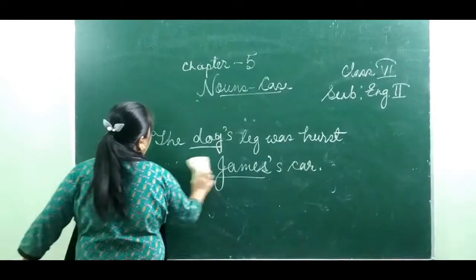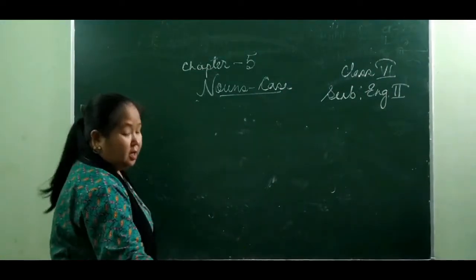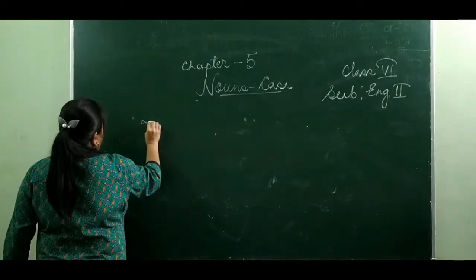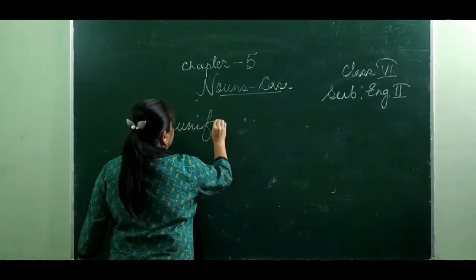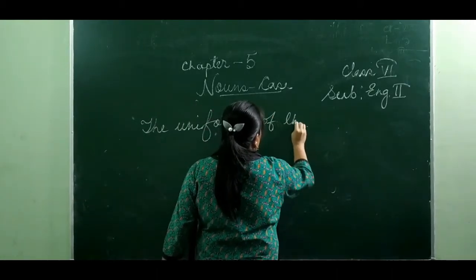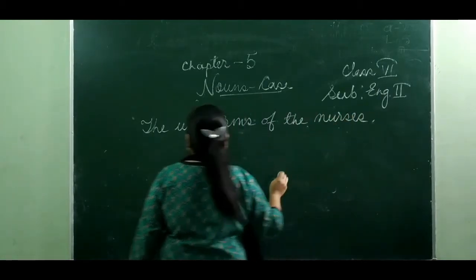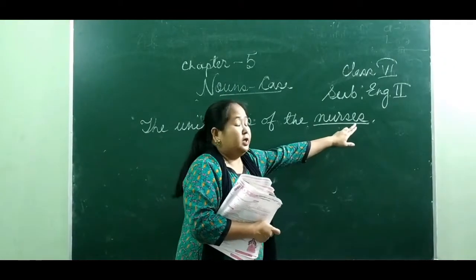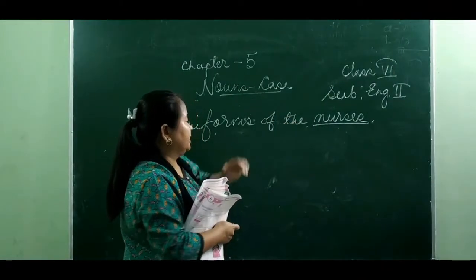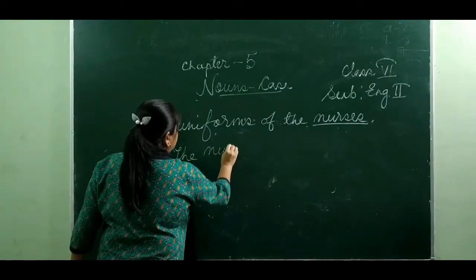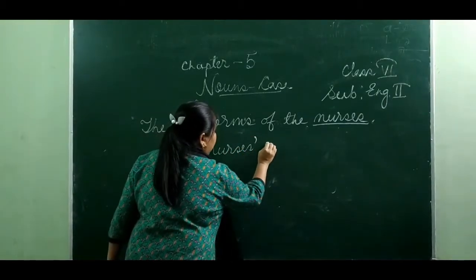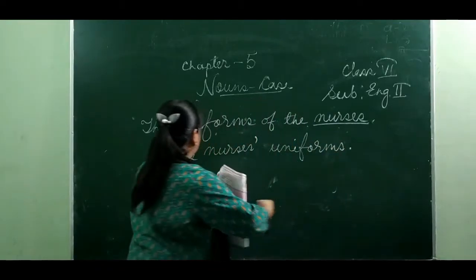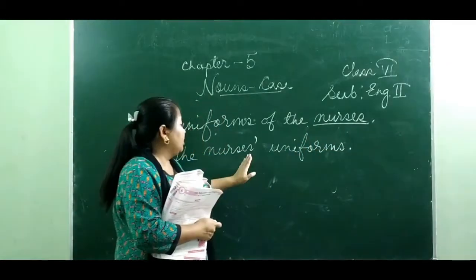But if the noun is plural, for example 'the uniforms of the nurses' — this plural noun ends in S. So here we need only the apostrophe. You cannot add S here. We write 'the nurses' uniforms' with only the apostrophe. So when a plural noun ends in S, we use only the apostrophe.